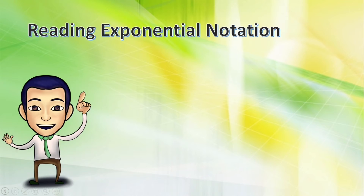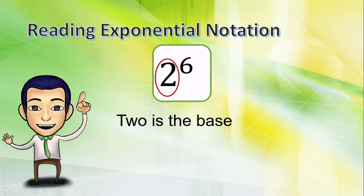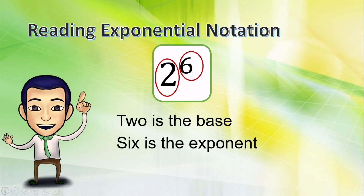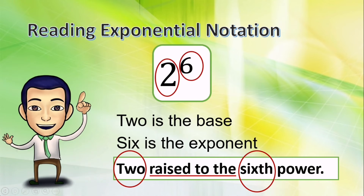This is how we are going to read exponential notation. Since two is the base and six is the exponent, we can read it this way: two raised to the sixth power. Just follow the format — say the base number first, plus the words 'raised to the,' then the exponent number in ordinal form, and lastly, the word 'power.' So again, how are we going to read this exponential form? Two raised to the sixth power.